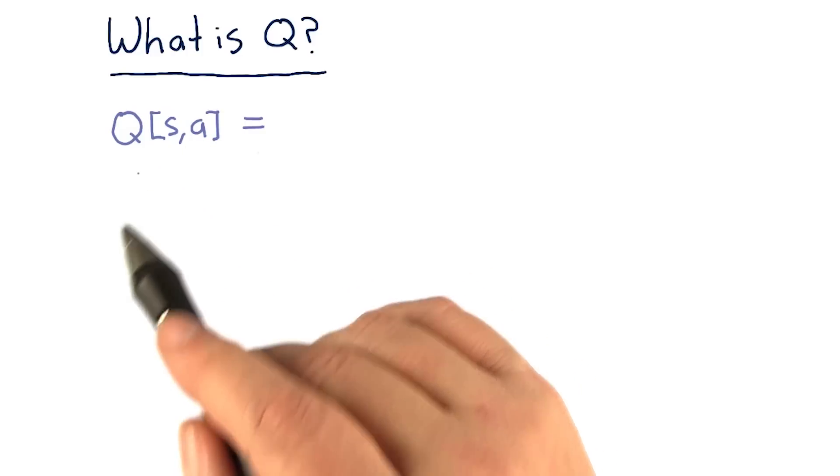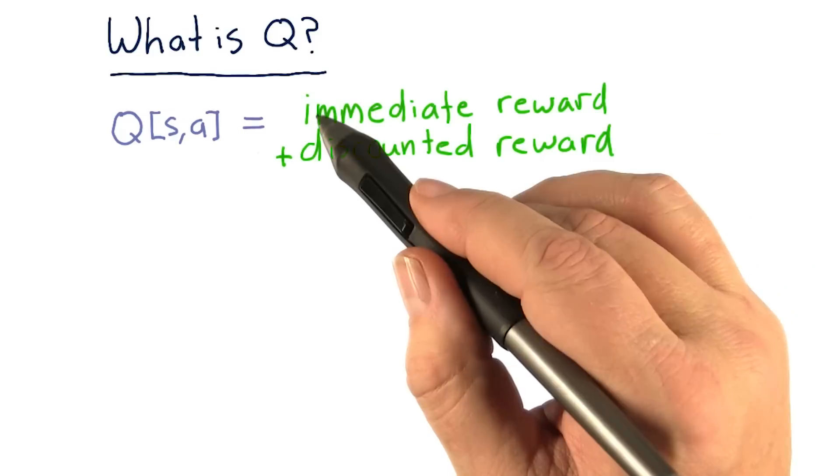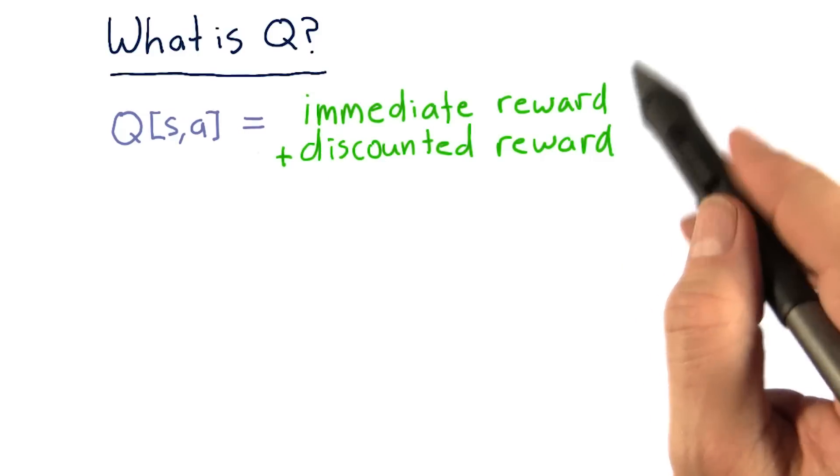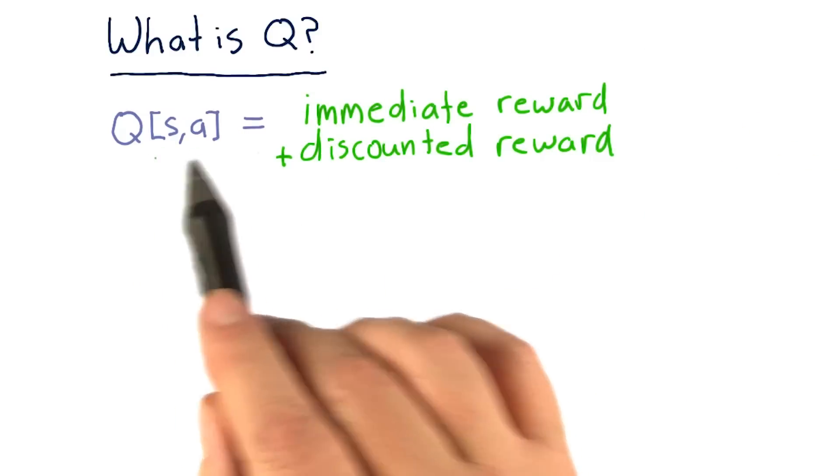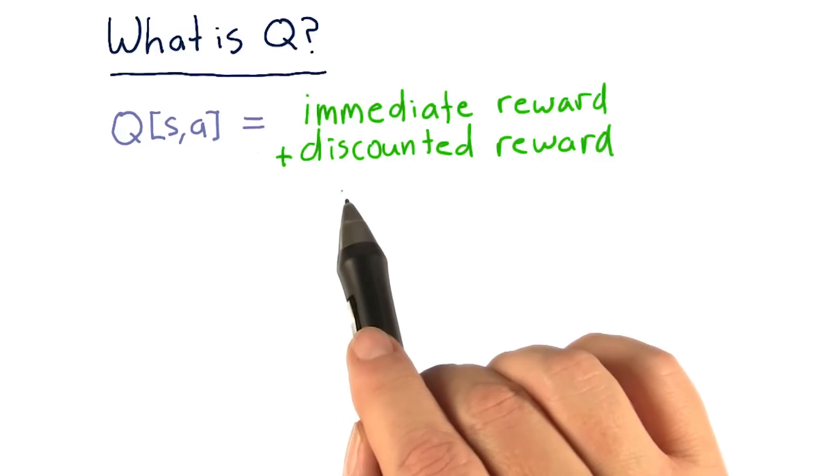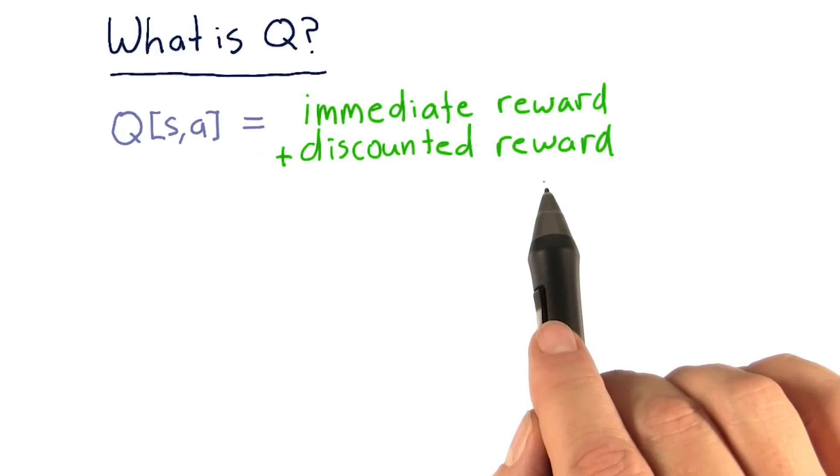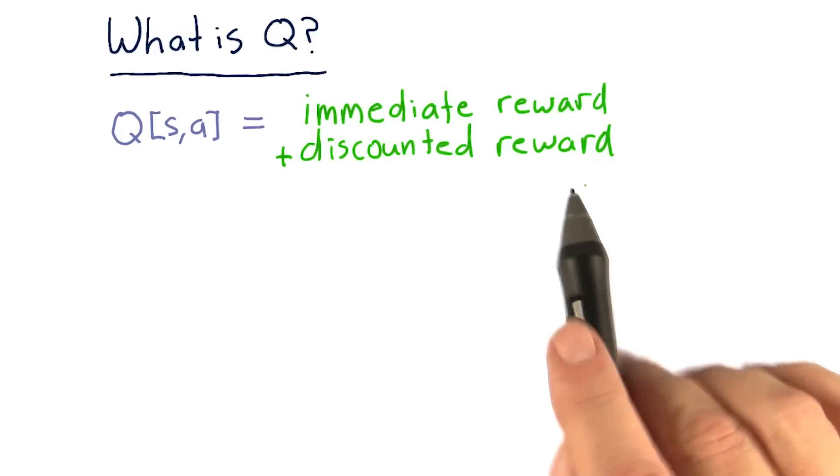And there's two components to that. The two components are the immediate reward that you get for taking action A in state S plus the discounted reward. And what the discounted reward is about,